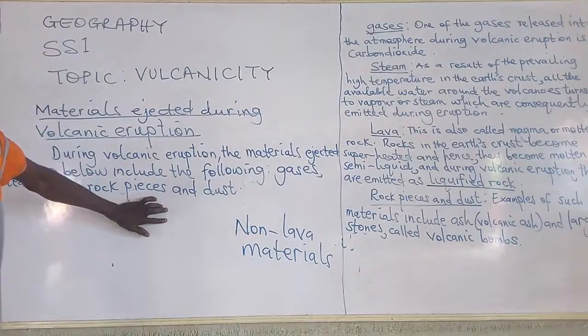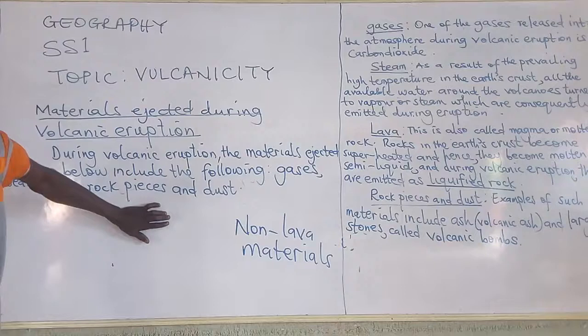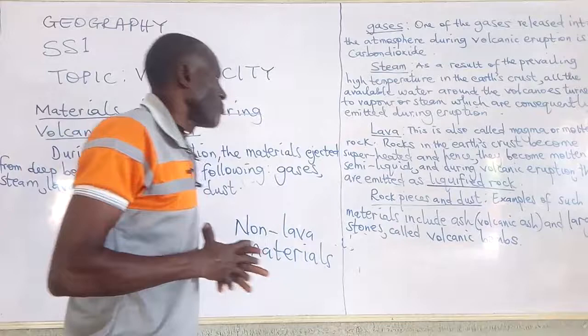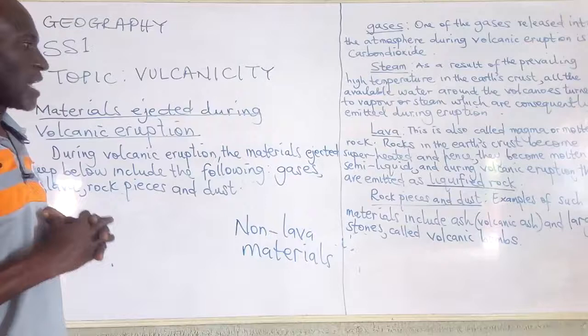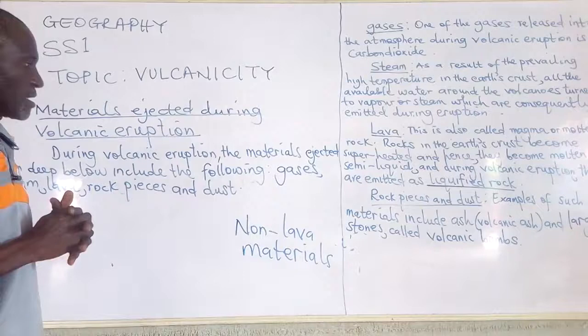Another non-lava material is volcanic ash. Volcanic ash represents the dust component of the non-lava materials — the dusts emitted into the atmosphere during volcanic eruption. So rock pieces and dusts are all categorized as non-lava materials.